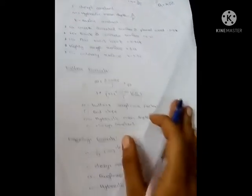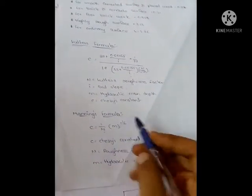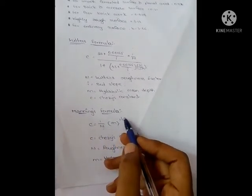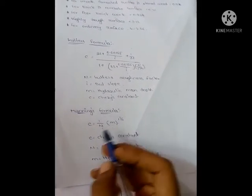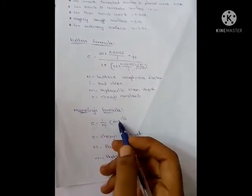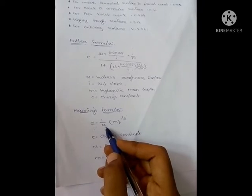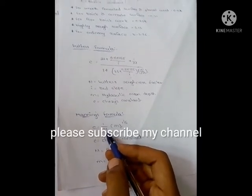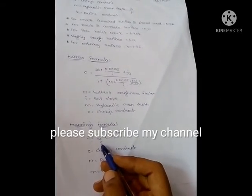Next, coming to Manning's formula: C equals 1 by n into M power 1 by 6. Again, C is Chezy's constant, M is hydraulic mean depth—these two are the same—and n is roughness factor, which is also given in the problem.